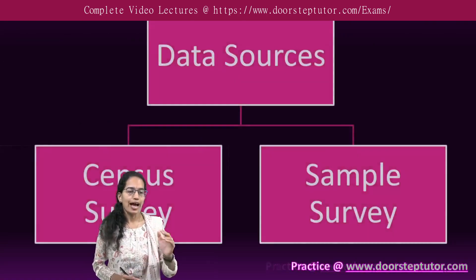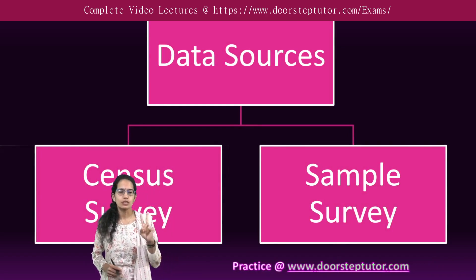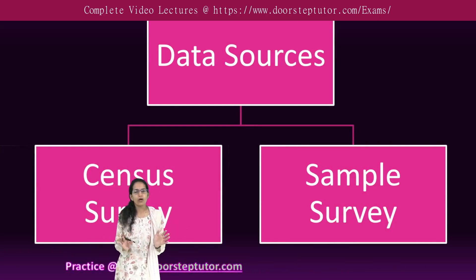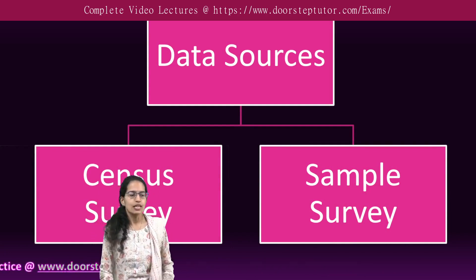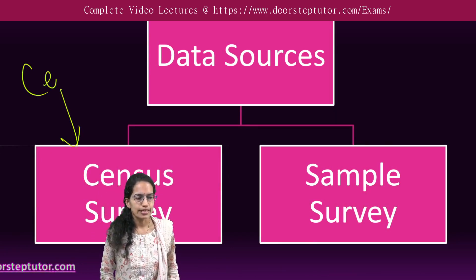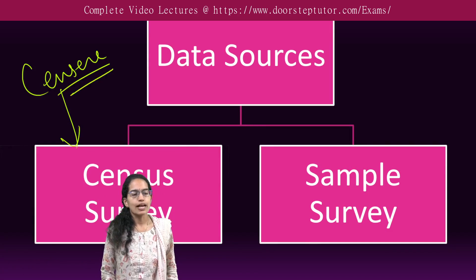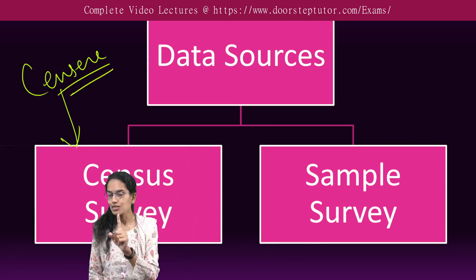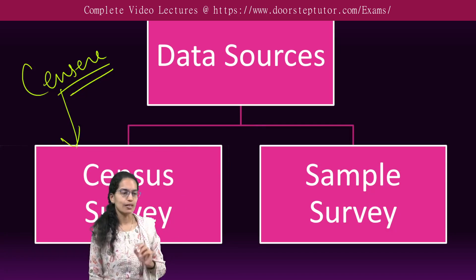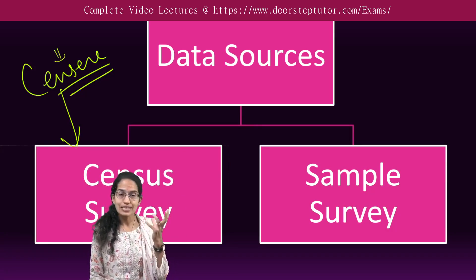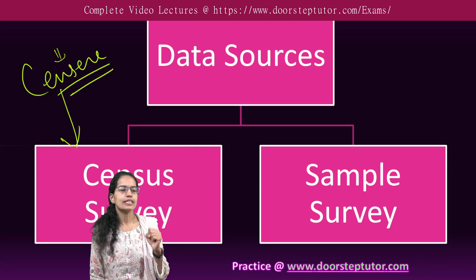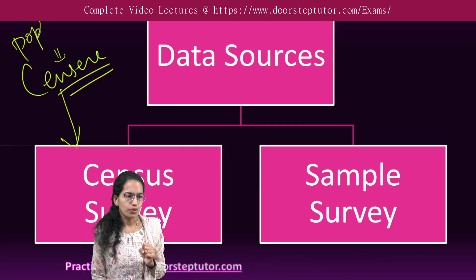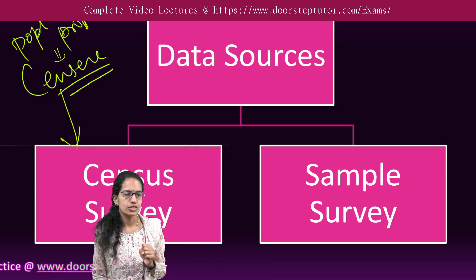Data sources can be collected either through a census survey or a sample survey. The word 'census' comes from the Latin word which actually means registration of the population — not just the population, but the property as well. That is the literal meaning of the word from Latin: registration of the population as well as registration of the property.